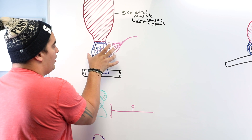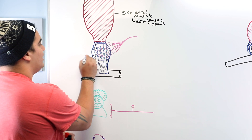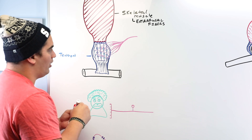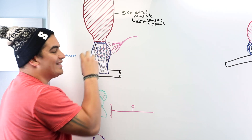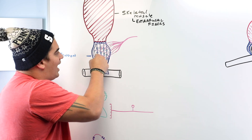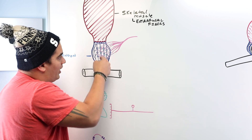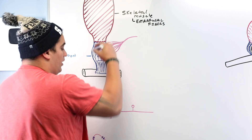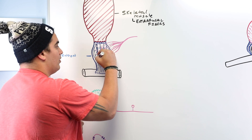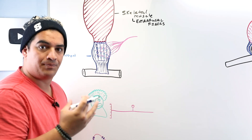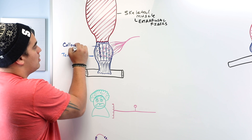The extrafusal fibers connect to the tendon. Running through the tendon — if we cut it open and look inside — you see these blue fibers running lengthwise, making little circles. These are called collagen fibrils.